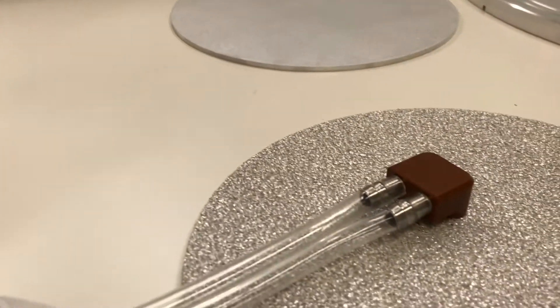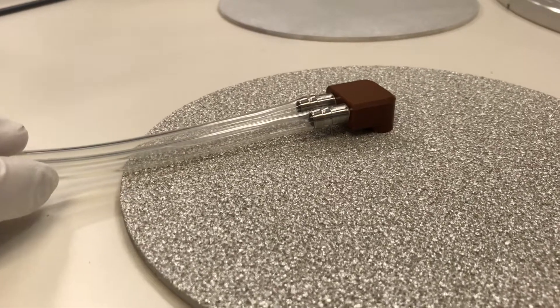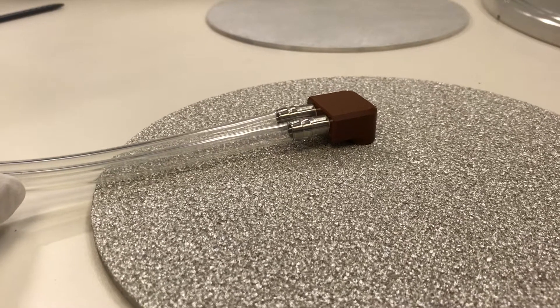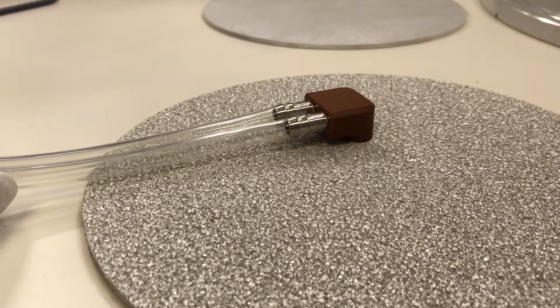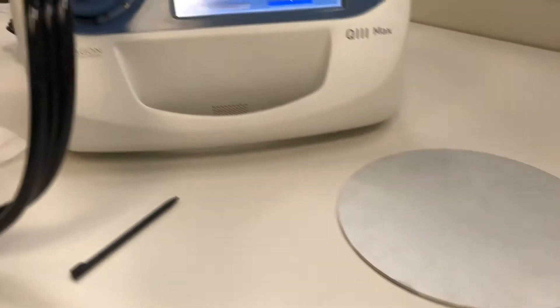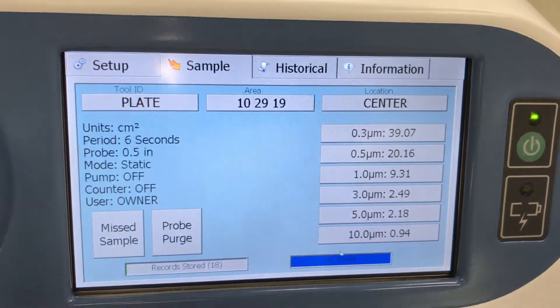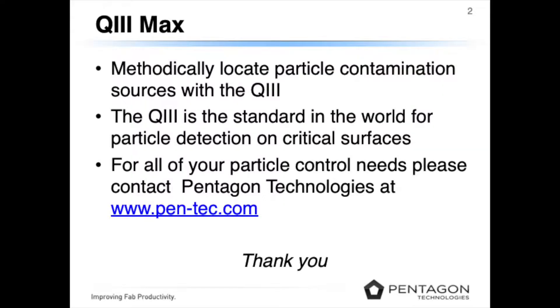Let's try one more measurement on the surface in a new location. In the new location, after the six second test, you'll notice that it also has a reduced particle count, down to 39.07 greater than 0.3 micron particles per centimeter squared. You can methodically locate particle contamination sources with the Q3.